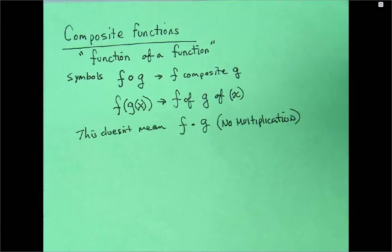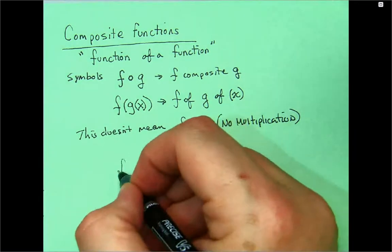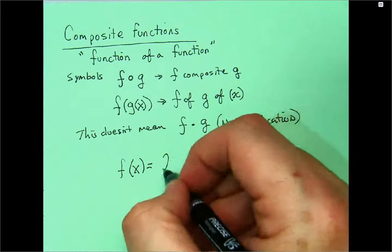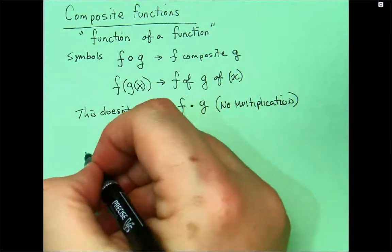And you might be given this: Find F composite G. Now, in mathematics, in order to figure out a composite function, it's basically going to be a brand new function that's built of both functions put together.